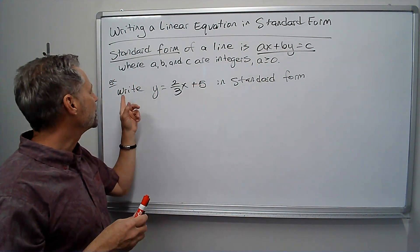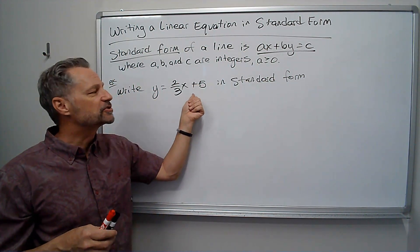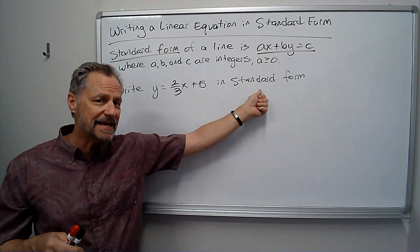Okay, so let's try one. We have the line Y equals two-thirds X plus five. We want to write that in standard form.